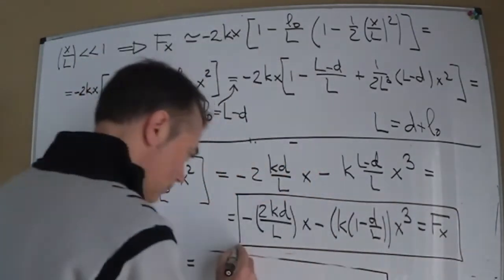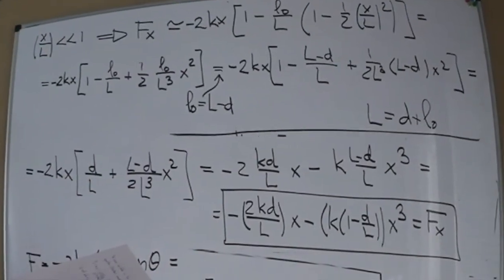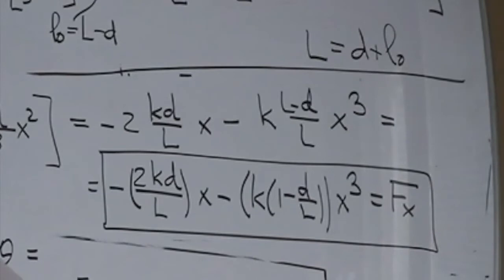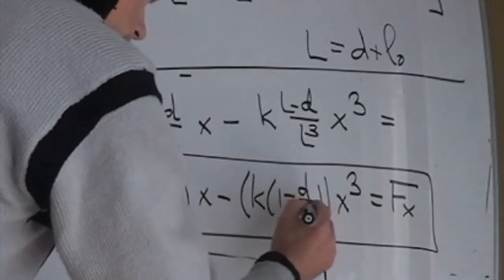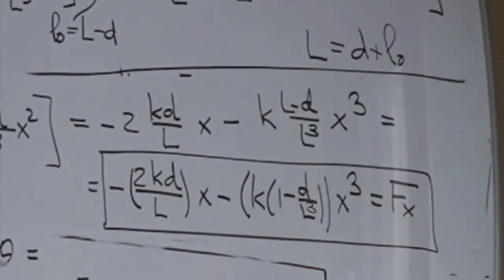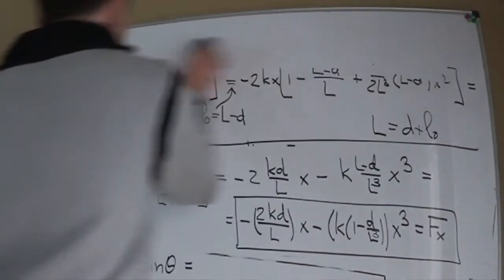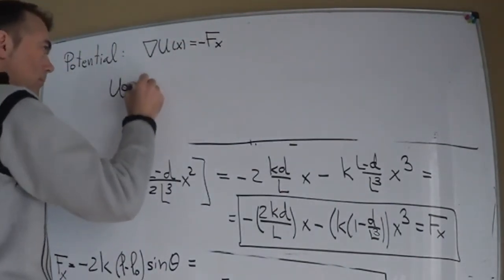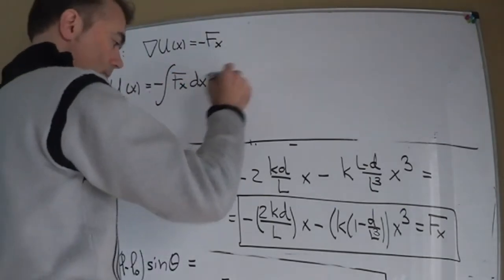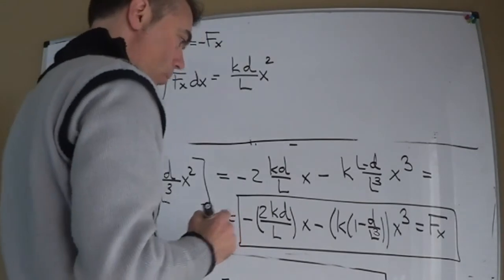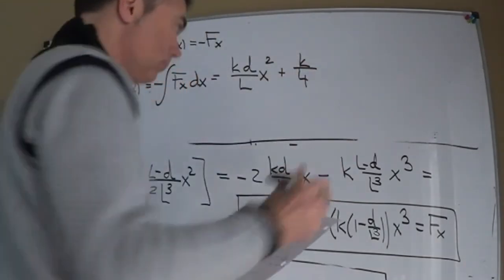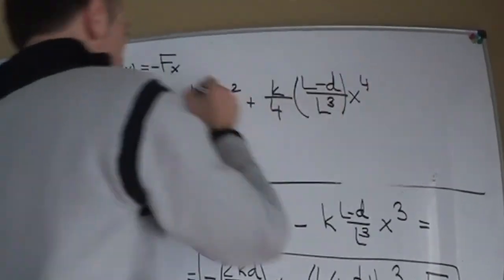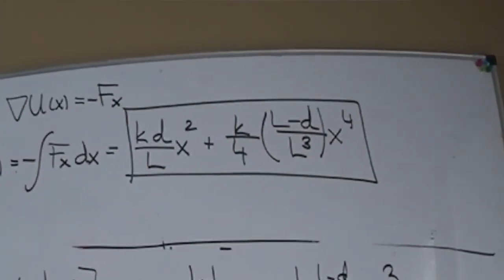So look at this — this is the force on the spring in the limit of small initial displacement. We get the linear term, but this adds a term to the power of 3. This is clearly nonlinear, even in the small displacement limit. Now let's write the potential by integrating the force with respect to x. This potential has a square term but also a term to the power of 4.